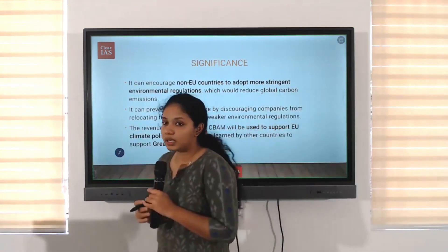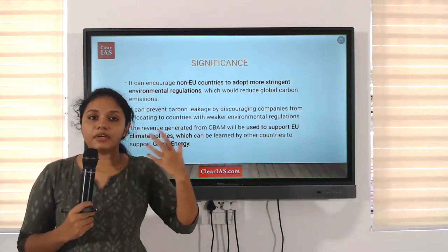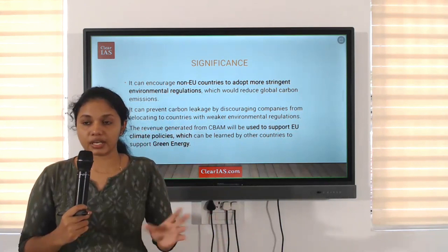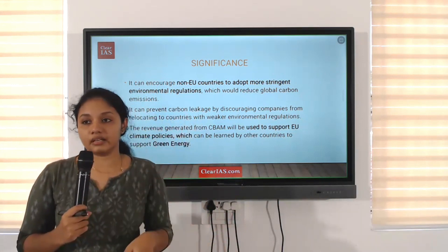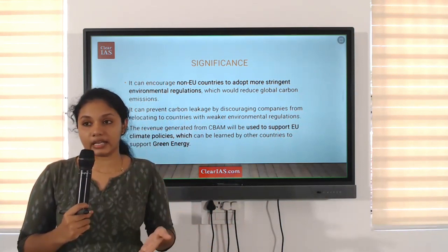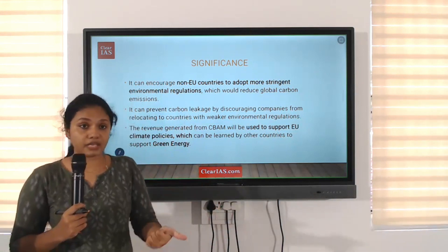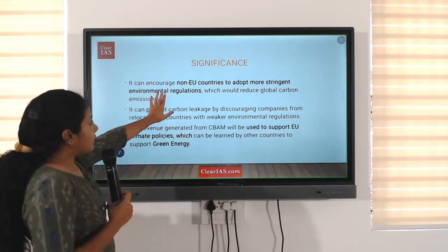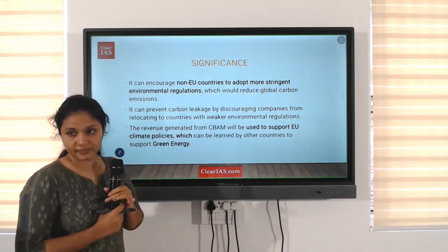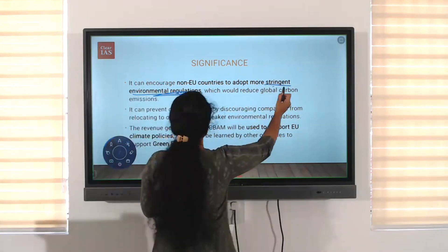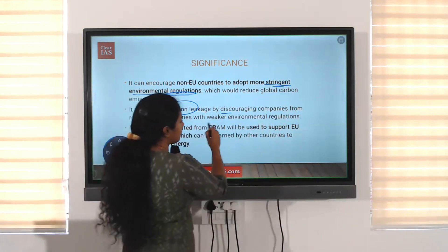The EU is a group of nearly 20 countries, so whenever we are exporting something, we need to pay this carbon tax. This indirectly means that if we want to avoid the tax, we need to shift to sustainable, low-carbon production. It also encourages non-EU countries to adopt more stringent environmental regulations, which will reduce global carbon emissions. CBAM can also prevent carbon leakage by discouraging companies from relocating to countries with weaker environmental regulations.